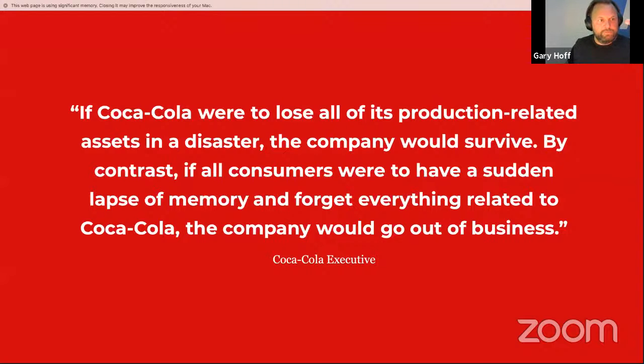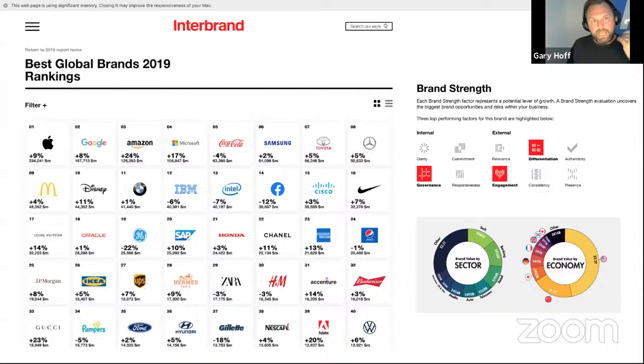So brilliant quote. I'll just give you time to read this. So that's pretty amazing to think about that. To think that if Coca-Cola were to lose all of its production related assets, the company would survive. But if everyone in the world forgot about the brand of Coca-Cola, they would go out of business. That's how important the brand is to Coca-Cola. And Interbrand is something that you can check out. They do a fantastic global report. It's online. Go and look. And they rank all the brands and how they've gone up or down and they measure it by internal and external factors.